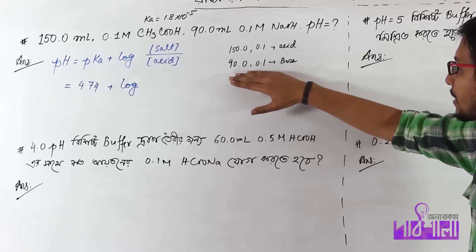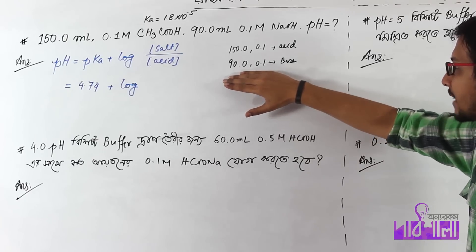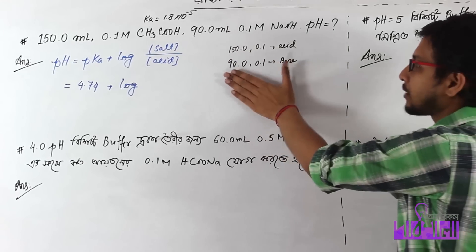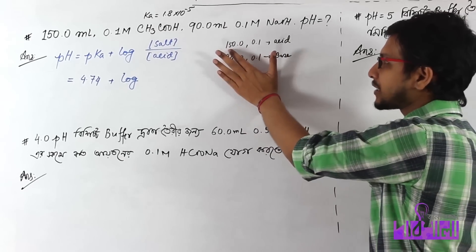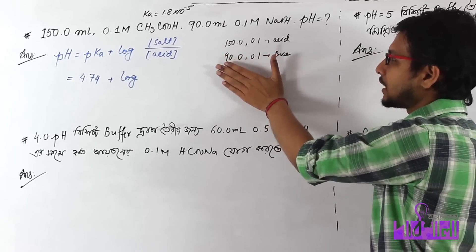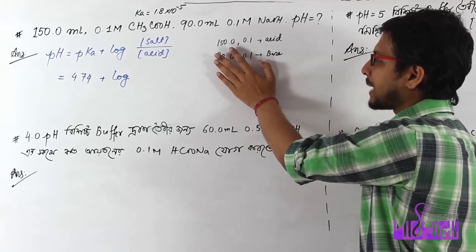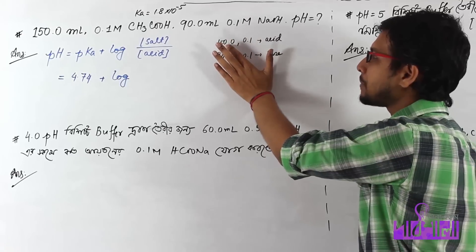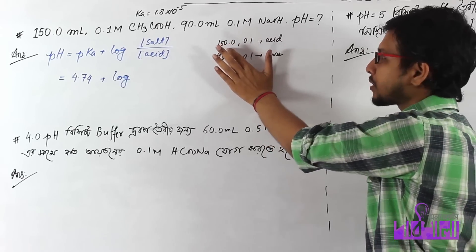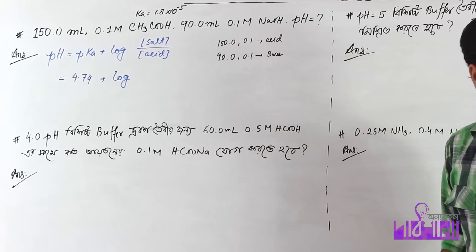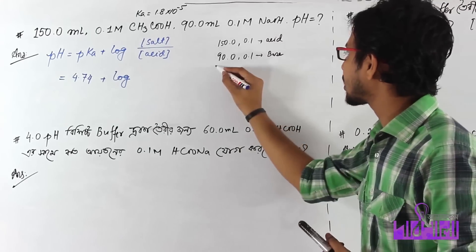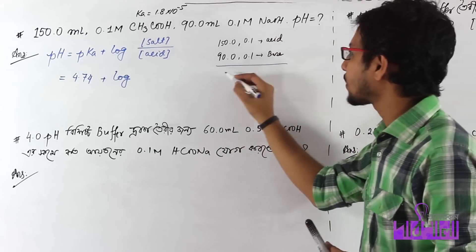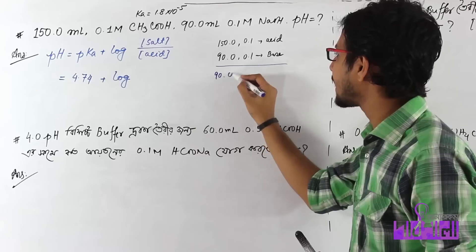If we mix this solution, the reaction will produce salt. We add 90 ml of base to the acid, making it a little more salt with an acid-base reaction. When we add 90 ml of base, what happens is the acid reacts and this reaction produces salt. How much salt is formed? 90 ml of 0.1 molar.